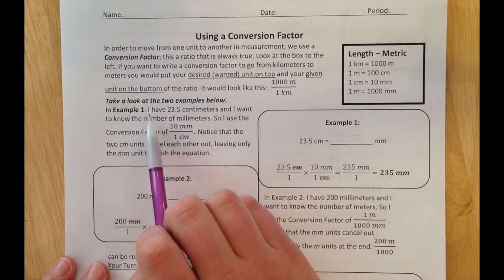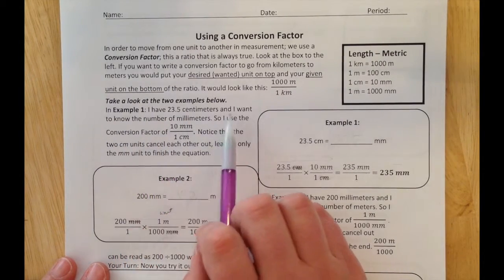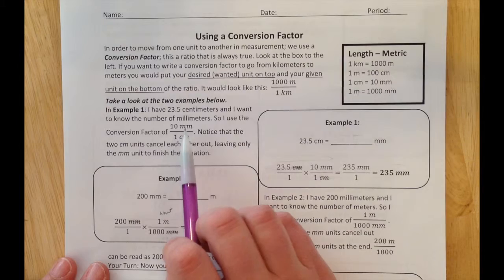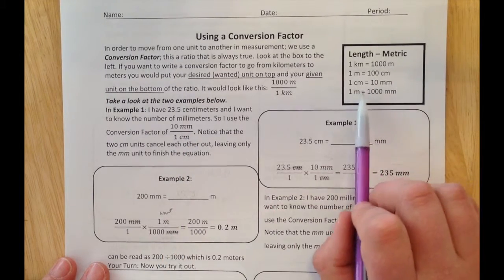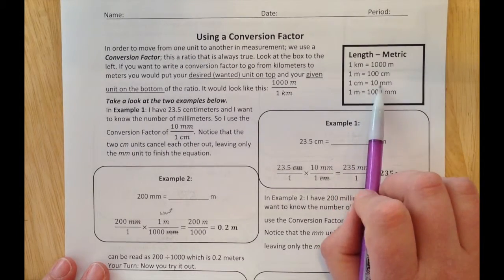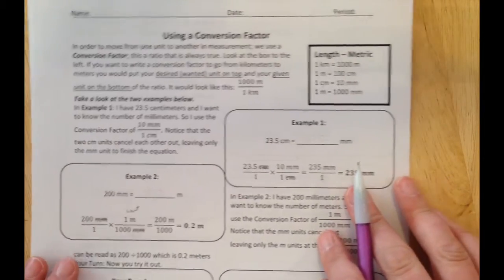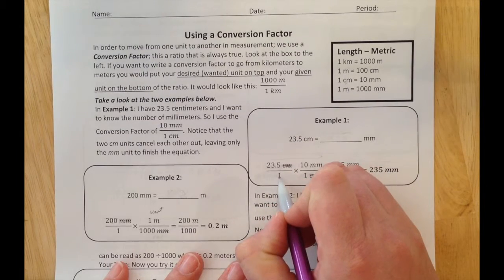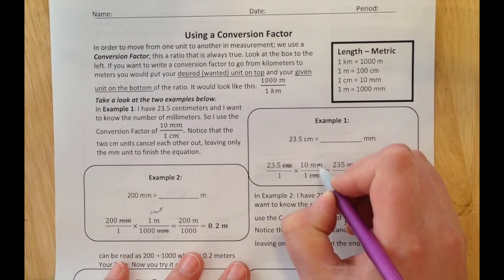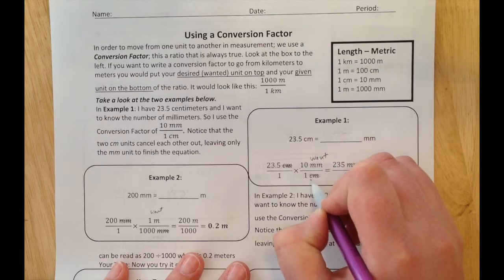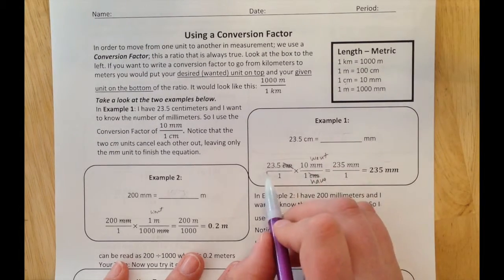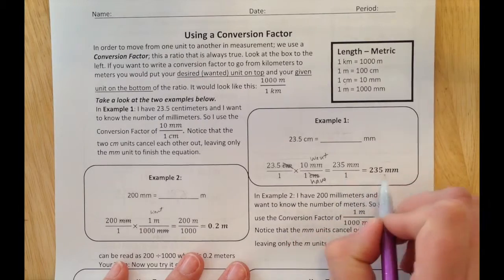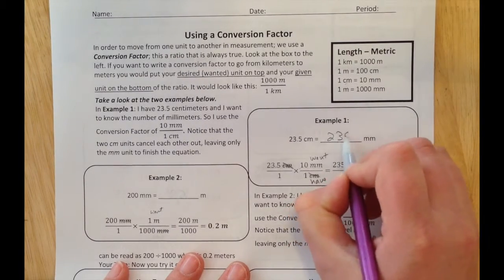Take a look at the two examples below. In example one, I have 23.5 centimeters and want to know the number of millimeters. So I use the conversion factor of 10 millimeters over 1 centimeter because I want millimeters and I have centimeters. I can say I have 23.5 centimeters over 1, times 10 millimeters over 1 centimeter. My centimeters cross out and I get 23.5 times 10, which is 235 millimeters.